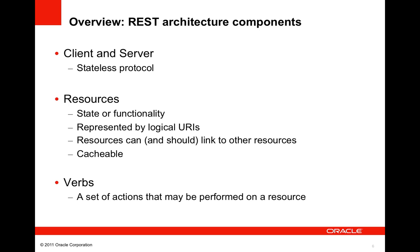The second major component of REST is the concept of a resource. A resource represents either state or functionality and is referenced with a unique global URI. A client uses a standardized interface to exchange representations of resources with one or more servers. Note that resources themselves are conceptually separate from the representations returned to the client. Resources may link to other resources using their URIs, and since a resource is uniquely identified by its URI, its representation can be easily cached by clients.